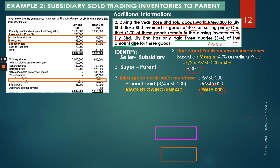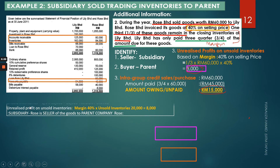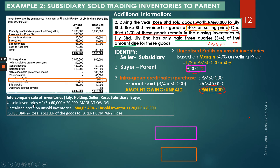To summarize: identify who the seller is, who the buyer is, how much inventory was sold, the amount owing, and how much unrealized profit there is and how to calculate it. Two adjustments are needed for consolidation purposes: one for the intragroup credit sale and purchase, and one for the unrealized profit on unsold inventories.